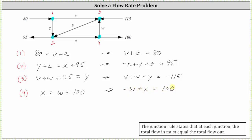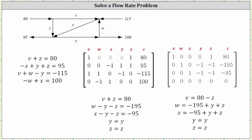From here we set up an augmented matrix. Because we have four equations and five unknowns, we will have a four-by-six augmented matrix. To make sure we set it up correctly, I highly recommend labeling each column. We have v, w, x, y, z for the first five columns in alphabetical order, and then the constant column as the sixth column.